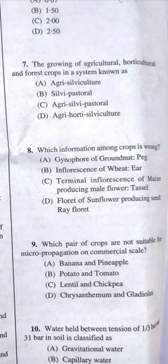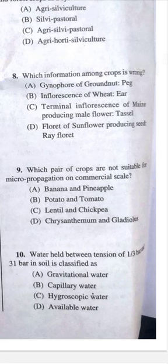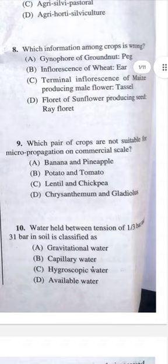Question 8: Which information among the crops is wrong? The answer should be D — ray florets of sunflower produce seed is wrong. Ray florets have neither male nor female flowers, so they do not produce seed. Answer is D.